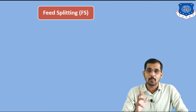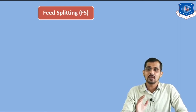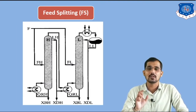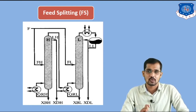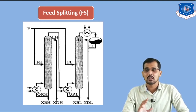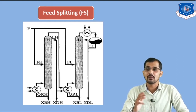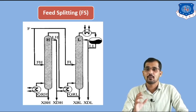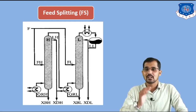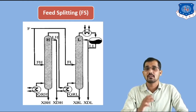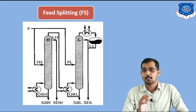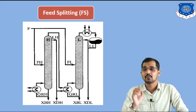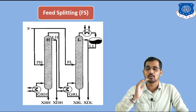We will see some sub-parts of Multiple Effect Distillation. The first one is feed splitting. Before that, you should know the function and principle of the distillation column. Distillation is a separation process where we remove liquid components using thermal energy, and the driving force for distillation is the difference in volatility. The pressure is decreasing from the top section to the bottom section of the distillation column — this is a very important point.